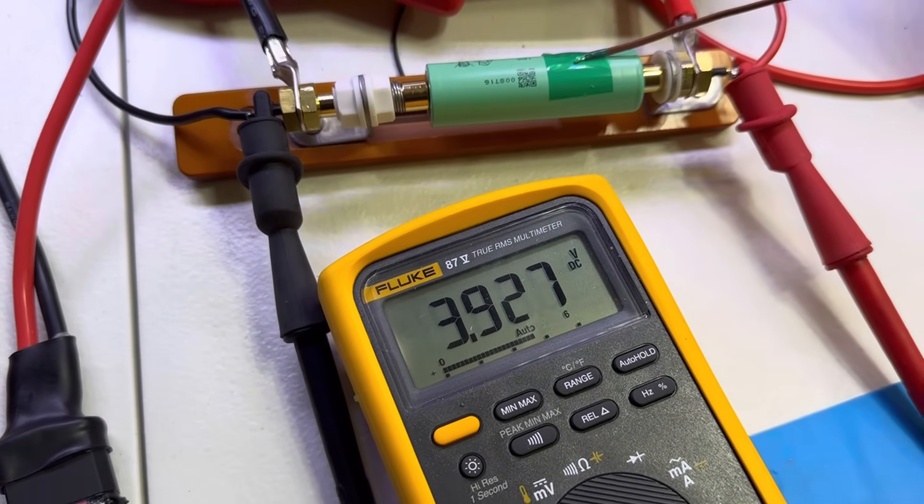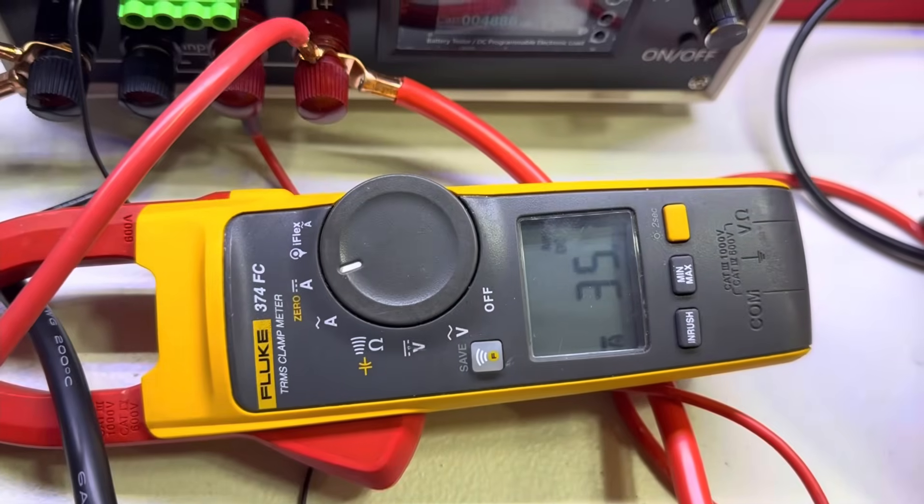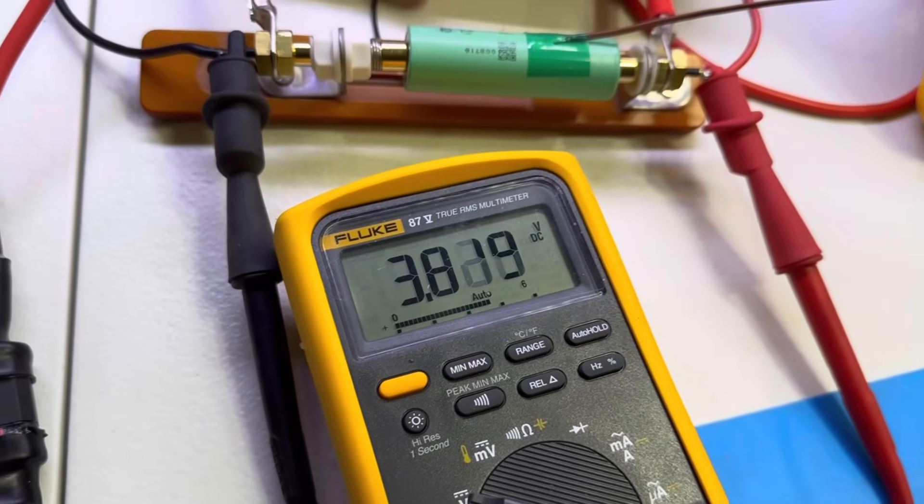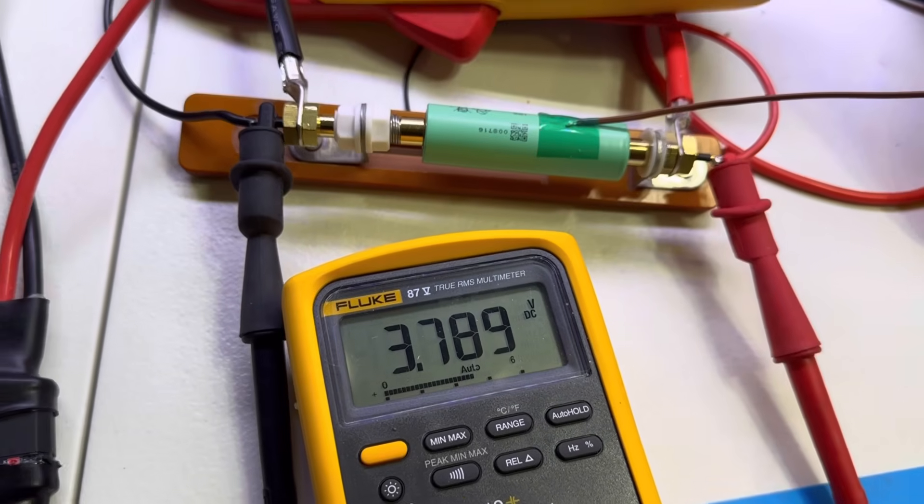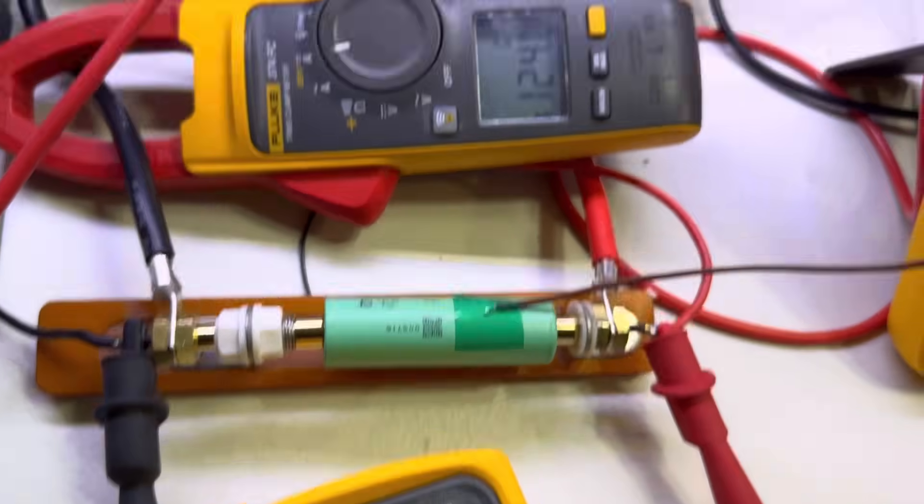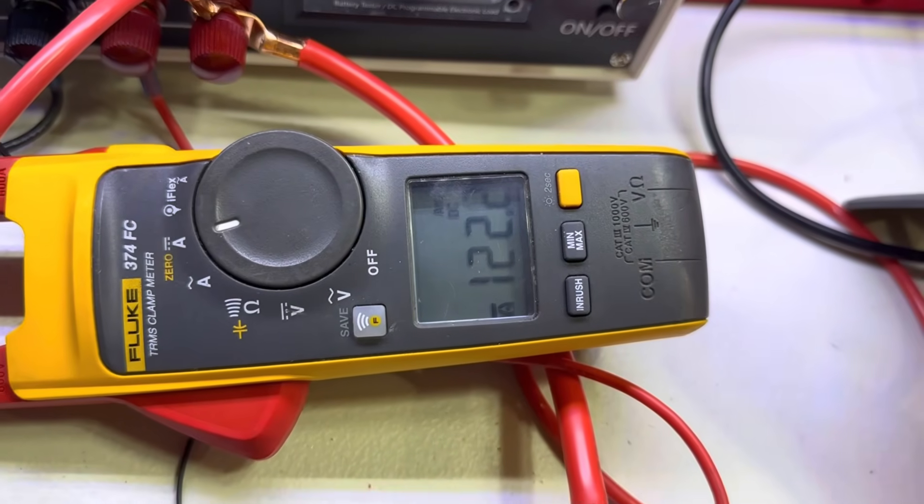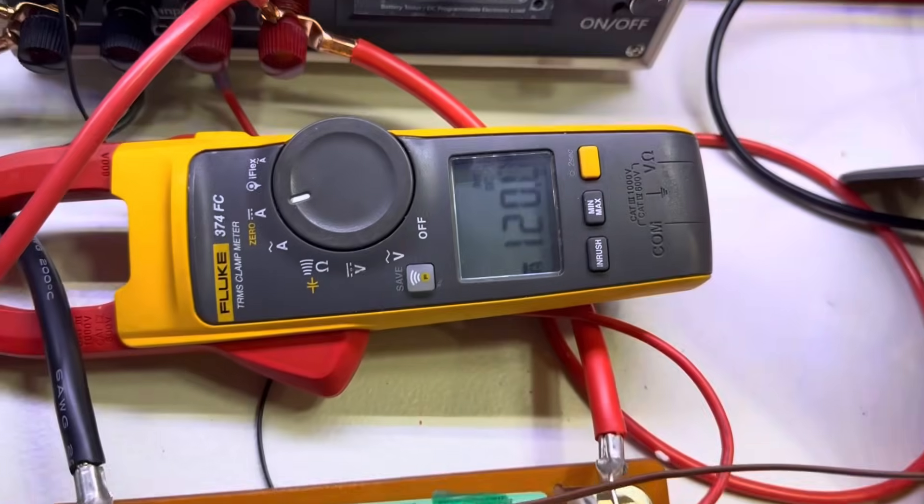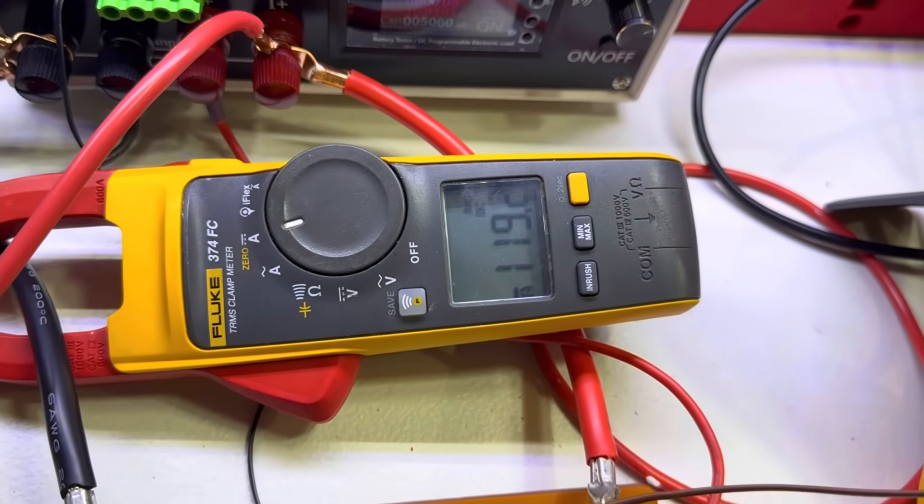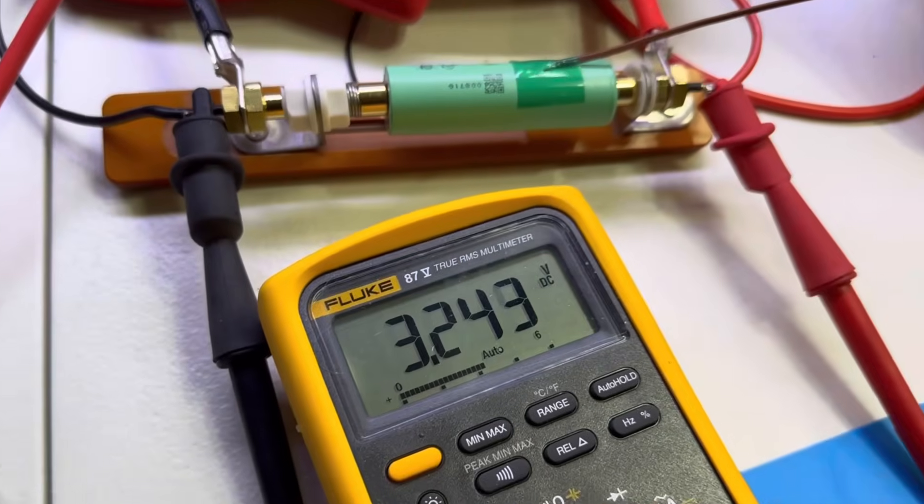All right, now we have 39 amps, 3.8 volts is the load. Look at that, I'm gonna activate the other one. 3.3 volts and it's pushing 122 amps. 3.28 is the sag. Keep going, keep going. Let's see the temperature.